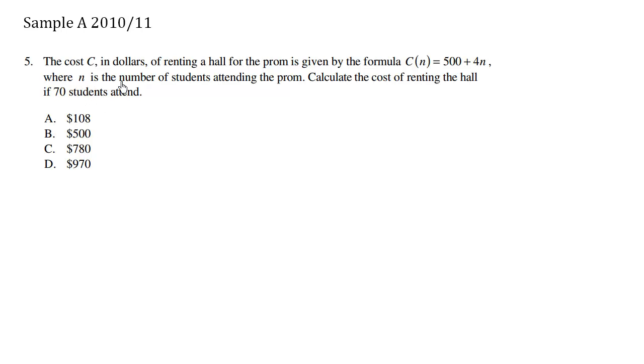The cost C in dollars of renting a hall for the prom is given by the formula C(n) = 500 + 4n, where n is the number of students attending the prom. Calculate the cost of renting the hall if 70 students attend.